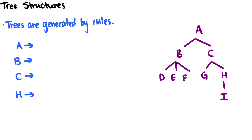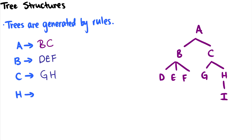For these rules, in the first node we notice that A splits into B and C. So our rule: A goes to B, C — that just means you take A and split off B and C into two branches. B goes to D, E, and F. C goes to G and H, and finally H goes to I.